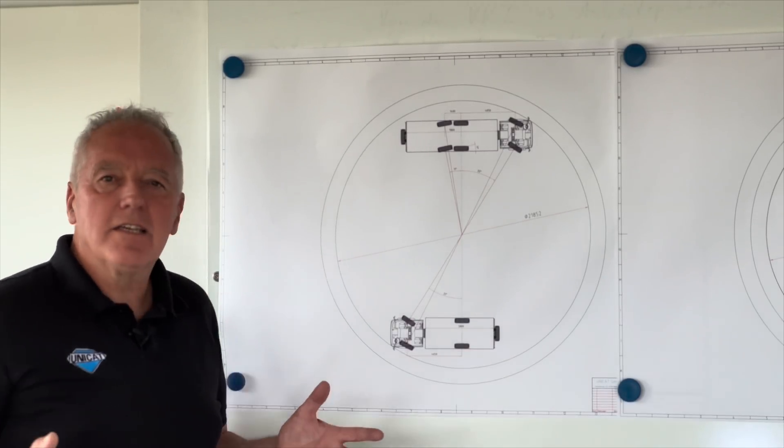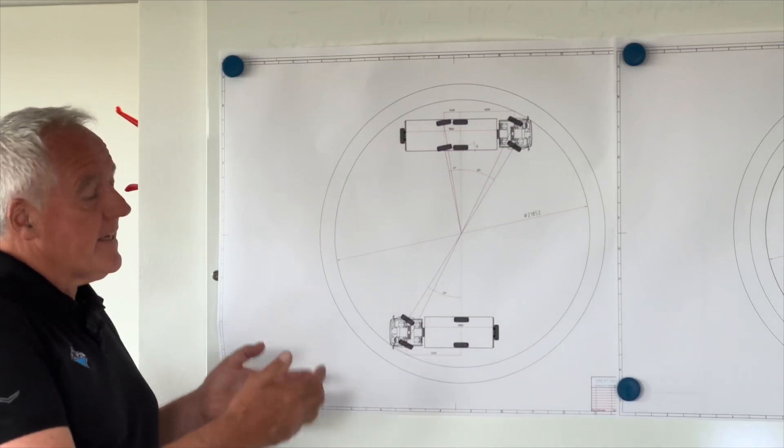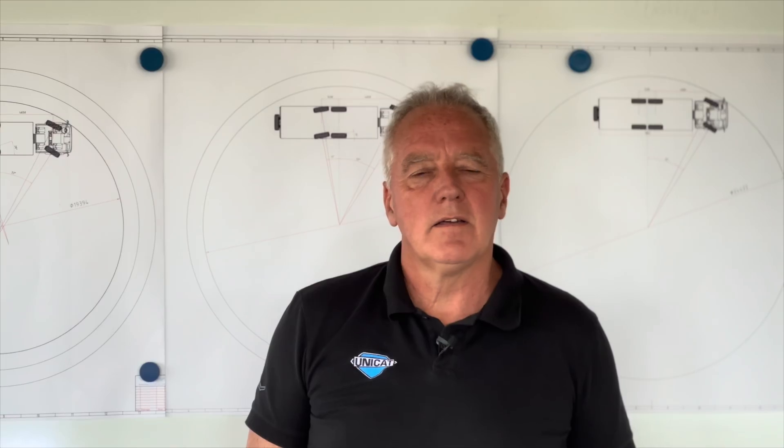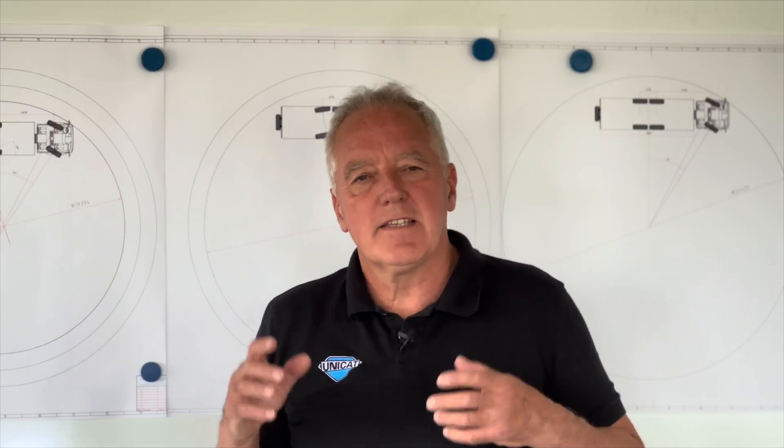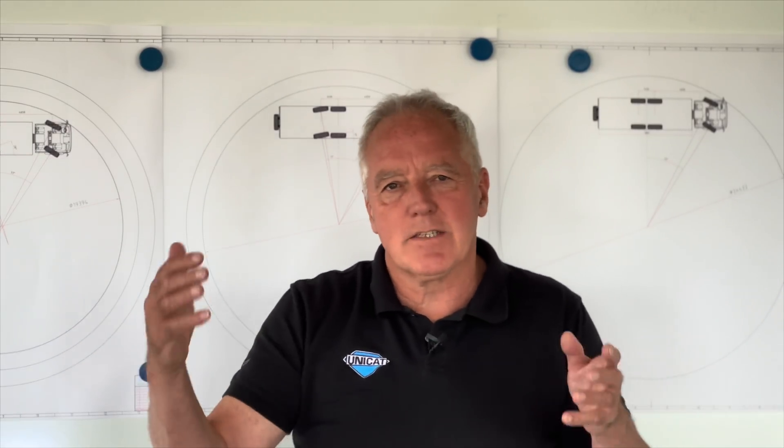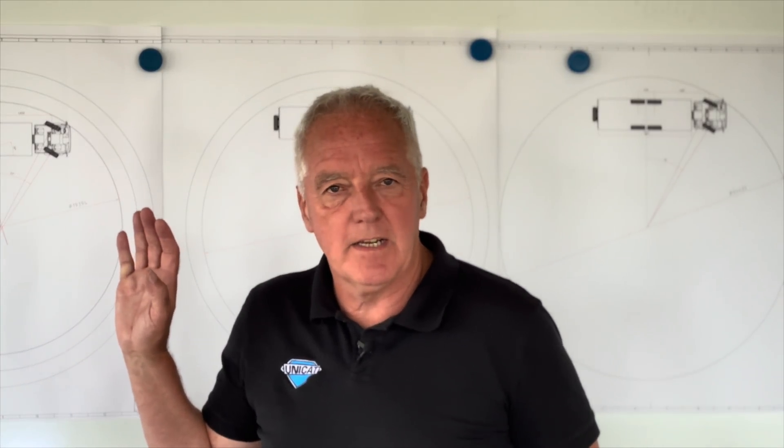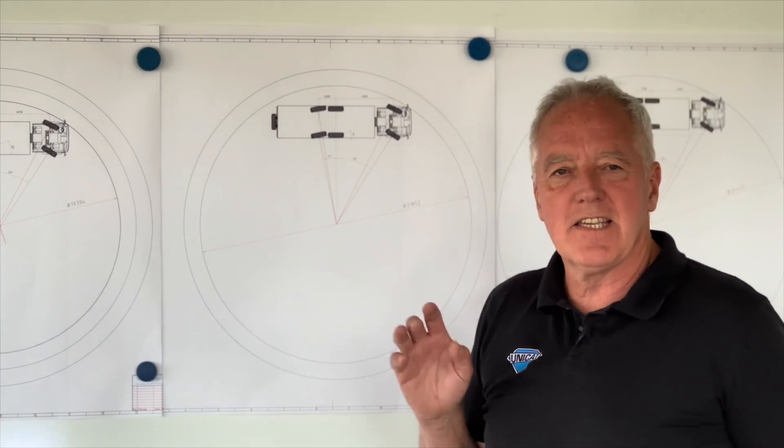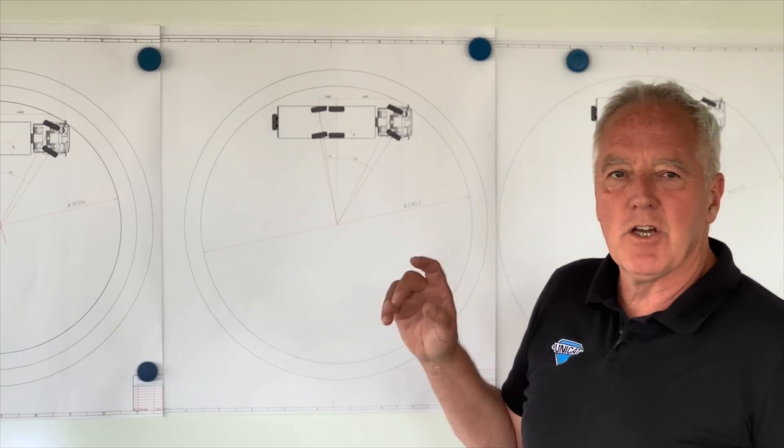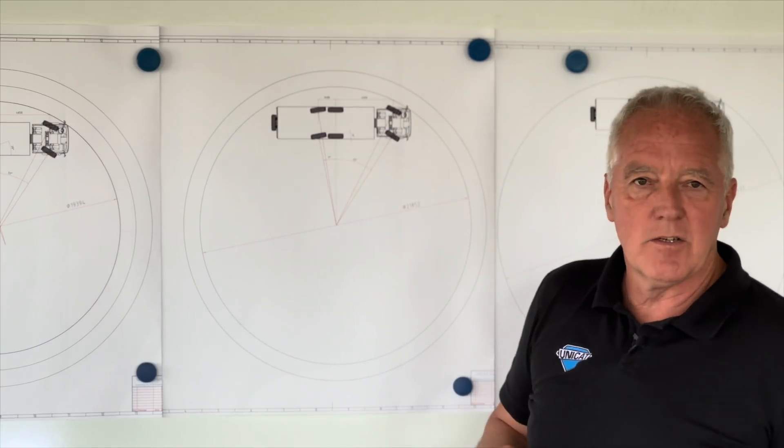And I think that's a very interesting information for everybody who is thinking about, well, shall I take a 4x4 or a 6x6? Of course, all this rear axle steering stuff is done on all-wheel drive vehicles. So it's not some extra two wheels in the back. We have always here a 6x6 vehicle. And actually, if we have a rear axle steering, we call it a 6x6x4. Because we have 6 driven wheels and we have 4 steered wheels.